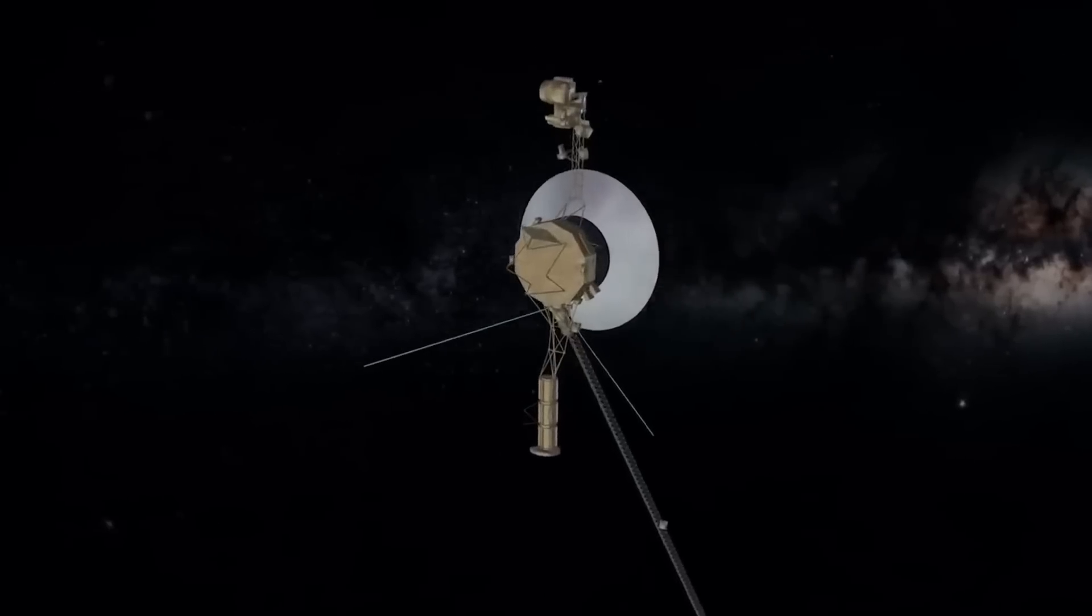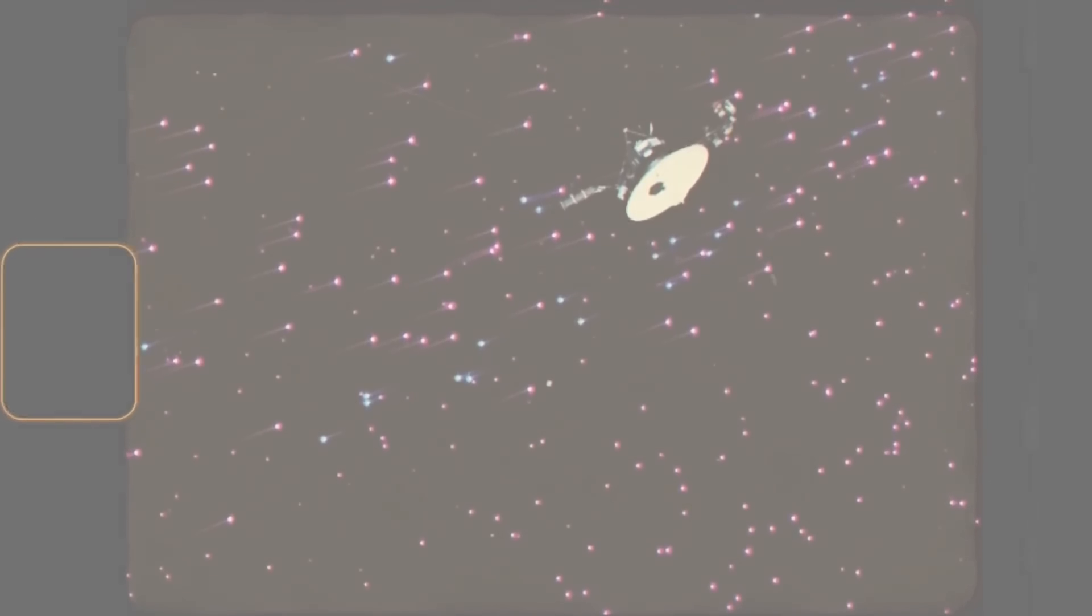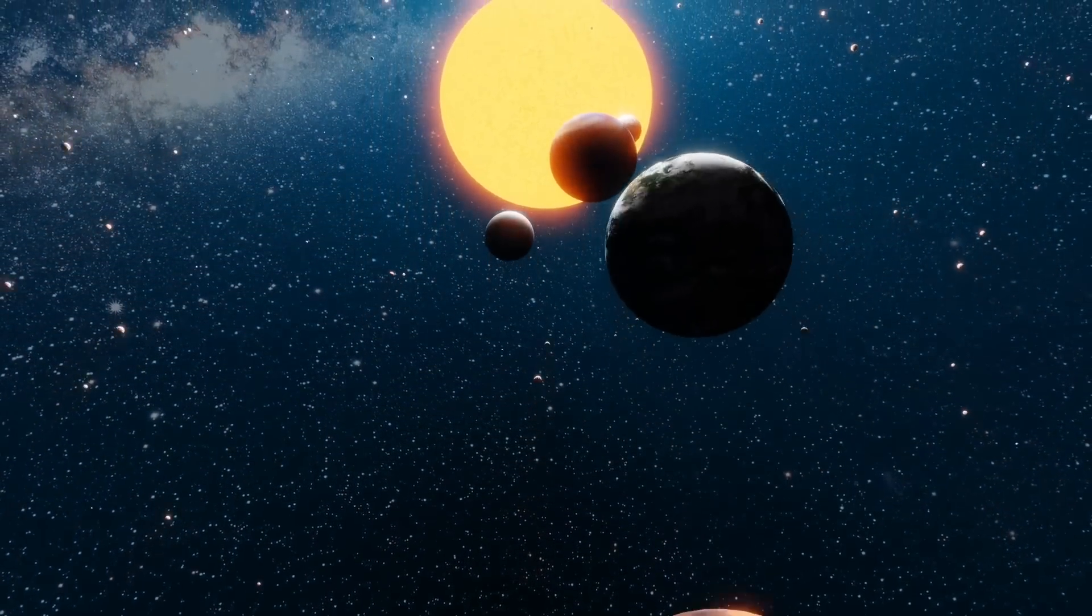Shortly after Voyager 1's encounter with Jupiter, Voyager 2 embarked on its own journey, which would take it on a grand tour of four outer planets: Jupiter, Saturn, Uranus, and Neptune.